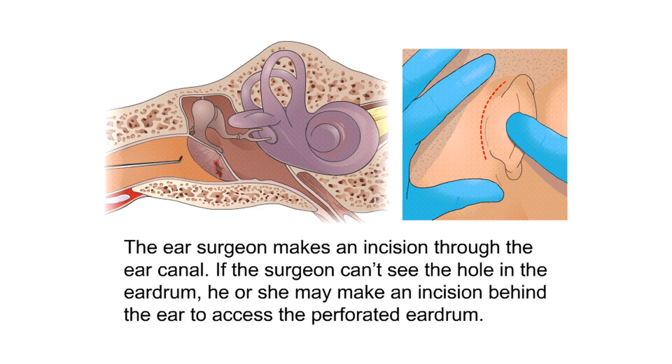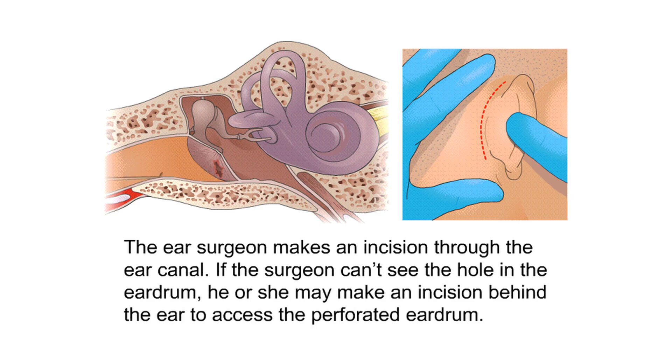The ear surgeon makes an incision through the ear canal. If the surgeon cannot see the hole in the eardrum, he or she may make an incision behind the ear to access the perforated eardrum.